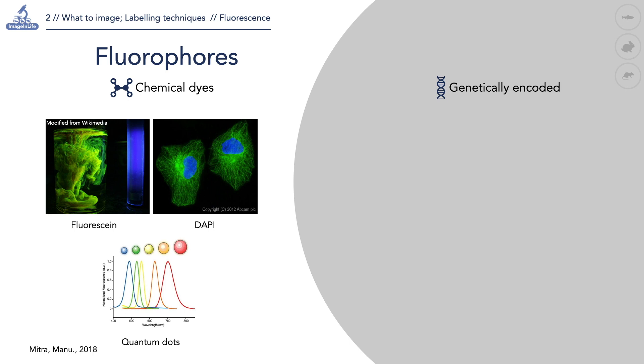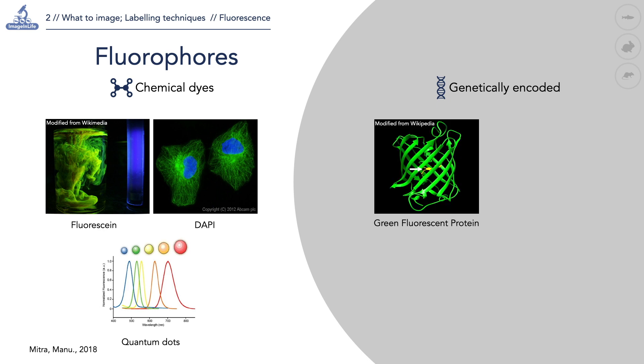The use of genetically encoded fluorophores started with the discovery of the green fluorescent protein found in the jellyfish Aequorea victoria. Other natural fluorescent proteins are found in marine organisms.